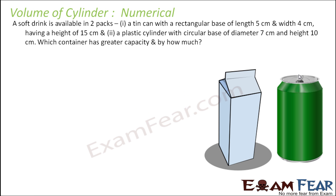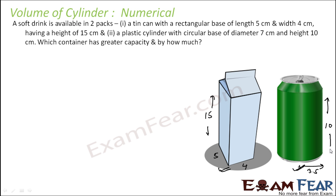A soft ring is available in two packs. The first is a tin can with a rectangular base of length 5 by 4 centimeter and height of 15 centimeter. The other is a plastic cylindrical container with a circular base of diameter 7 centimeter, so radius 3.5 centimeter, and height of 10 centimeter. We have to find which container has greater capacity.